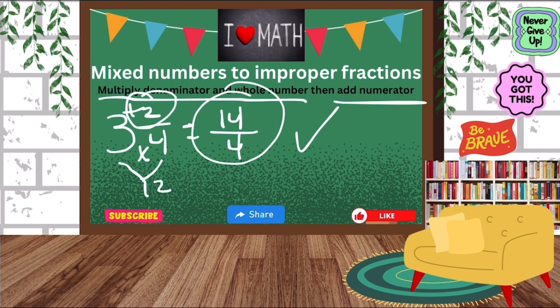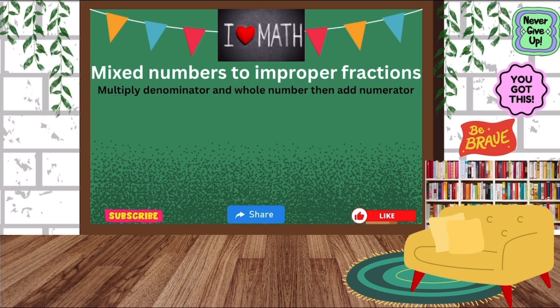So that's how we got 14 fourths. All right. So now let's try another one. Let's write 2 and 2 fifths. So we're going to convert that. Remember, multiply your denominator and your whole number and then add your numerator.